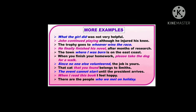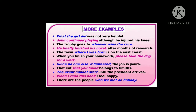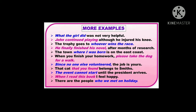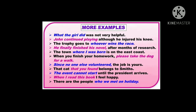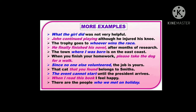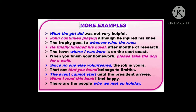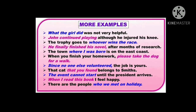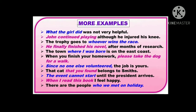Let's identify the dependent and independent clauses in the given sentences. 'What the girl did was not very helpful' — the highlighted words are the independent clause. 'John continued playing although he injured his knee' — the highlighted words are the independent clause. 'The trophy goes to whoever wins the race' — the highlighted words are the independent clause. 'He finally finished his novel after months of research' — the highlighted words are the independent clause.